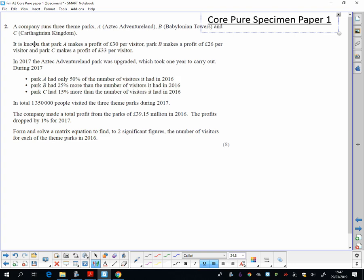Remember with these you should always define your variables. I've got three theme parks, so I'm going to say A is - you have to see what you think it might be. We read all the information, and it's all given about the number of visitors they had in 2016. So my three variables are going to be: A is the number of visitors to park A in 2016. You have to be very specific about that. Then you do the same for B and C - park B and park C. You'll have to write that in your exam.